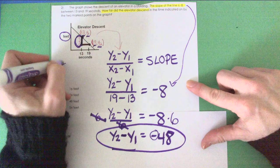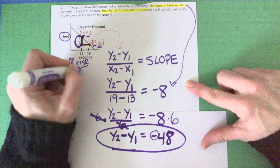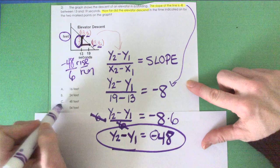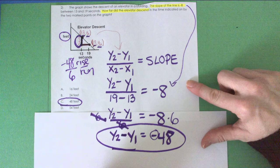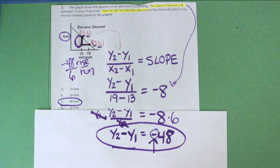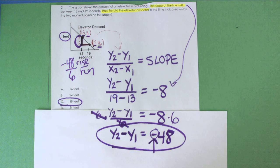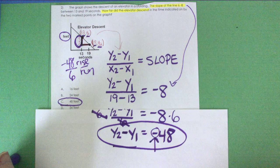The negative just tells me I'm coming down 48 feet during this 6 second period. So down 48 feet over the 6 second period. It's like my rise and my run. So my answer for number 2 is 48 feet. That's how far the elevator descended during the 6 second interval. That's numbers 1 and 2. Watch the next video for numbers 3 and 4.